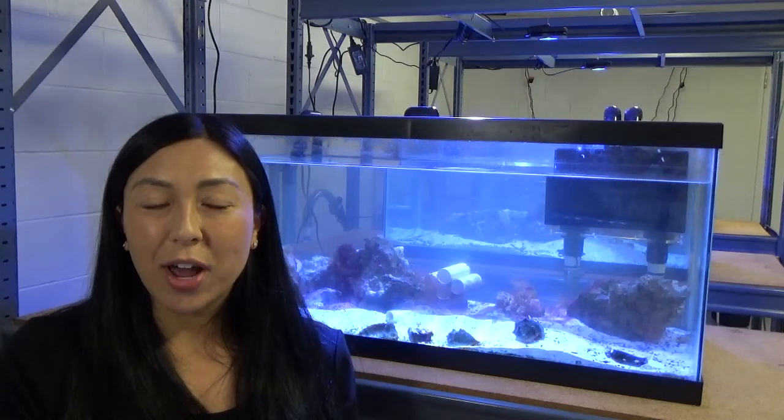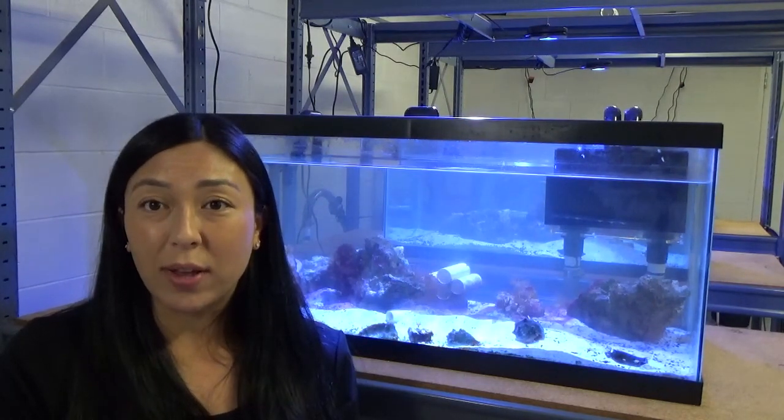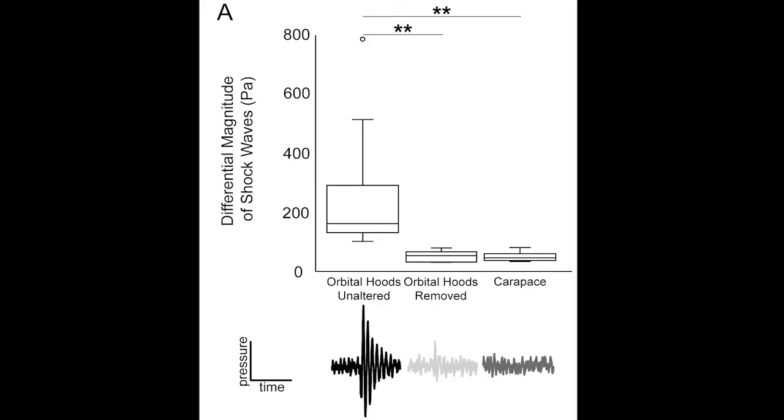We further tested whether or not the carapace, or the shell, is capable of dampening shockwaves, so we move our pressure sensors to the carapace that covers the gills. When we have our conspecific snap at this individual, we no longer see a difference between the sensors, meaning that the carapace itself is not capable of dampening shockwaves.